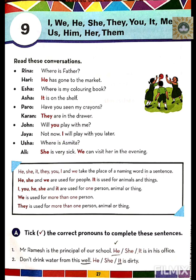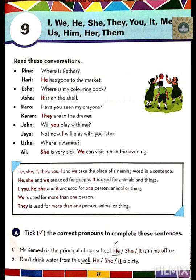Usha: Where is Ashmita? Ali: She is very sick. We can visit her in the evening. Here 'she' and 'her' are used in place of Ashmita's name.